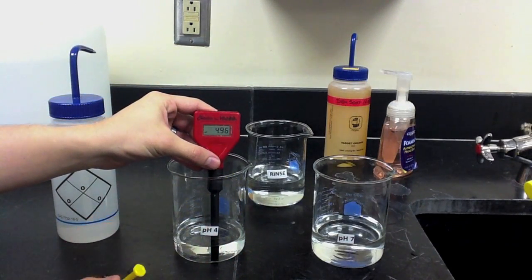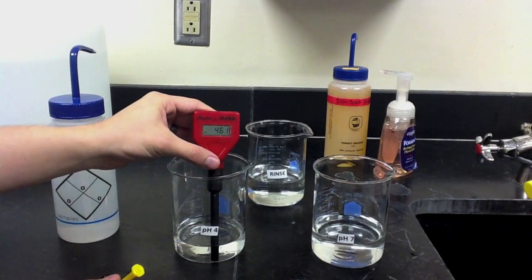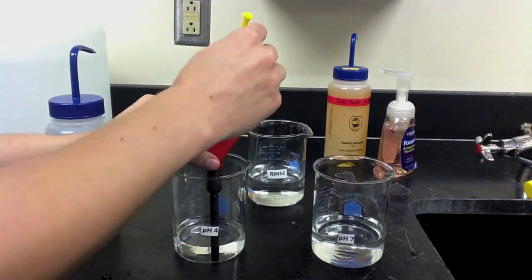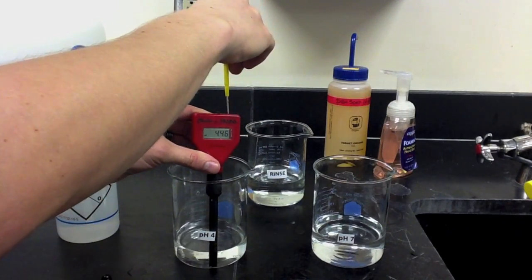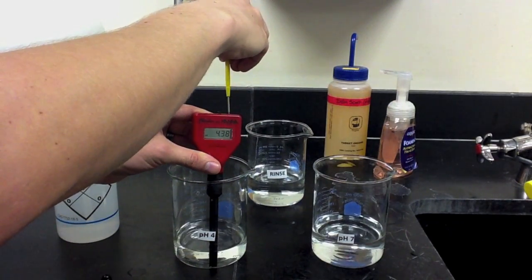Similar to adjusting it to a pH of 7, we'll see what the current pH reading is and adjust appropriately. Because it's above 4, we're going to adjust the screw counterclockwise until the pH reads 4.00.